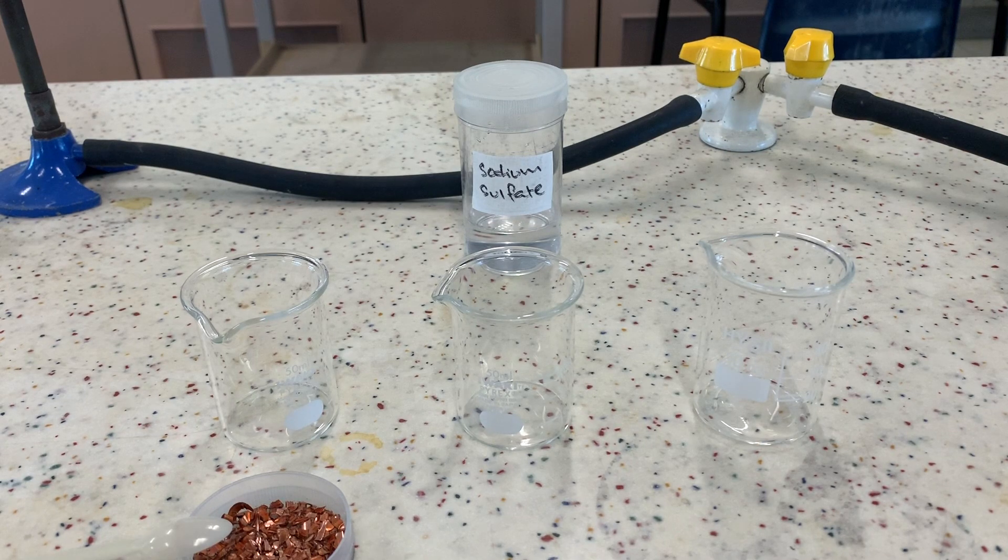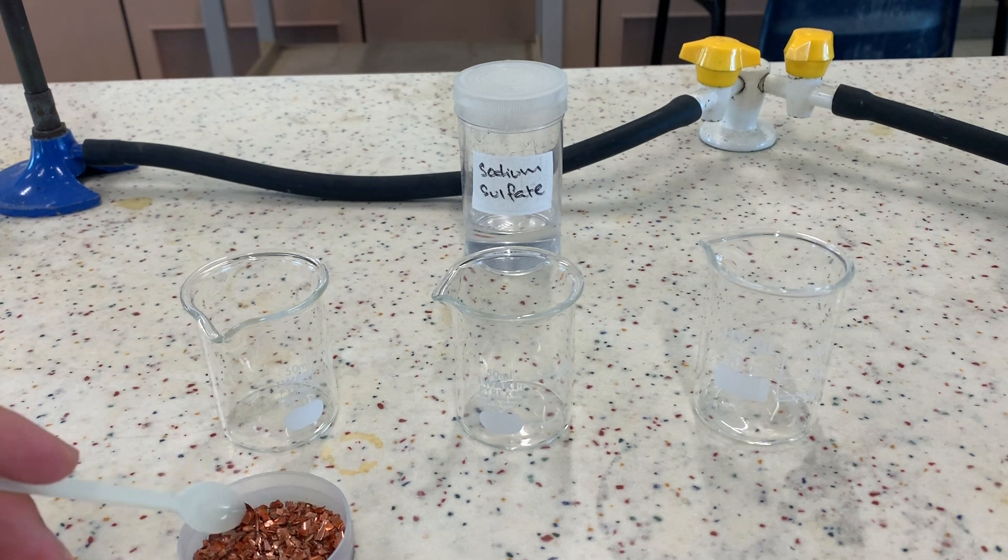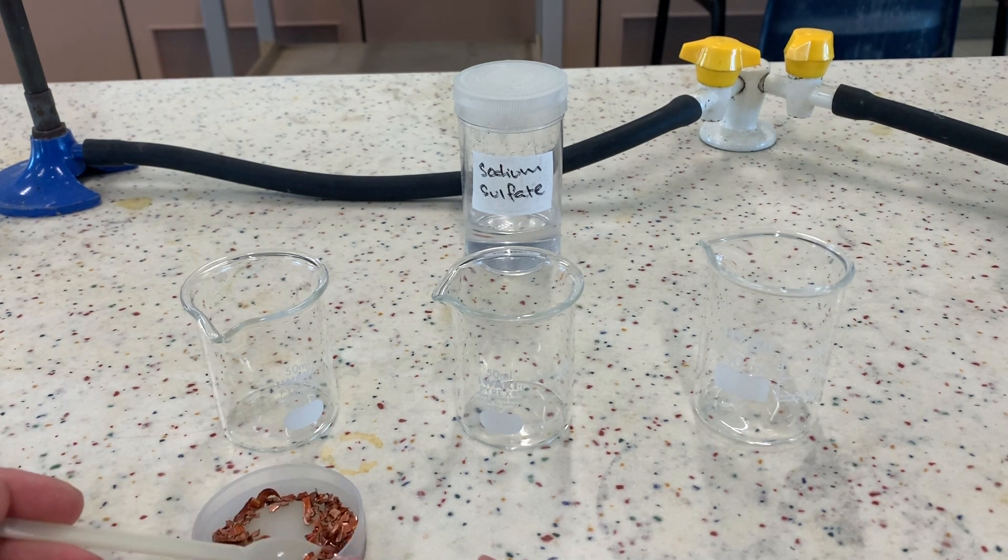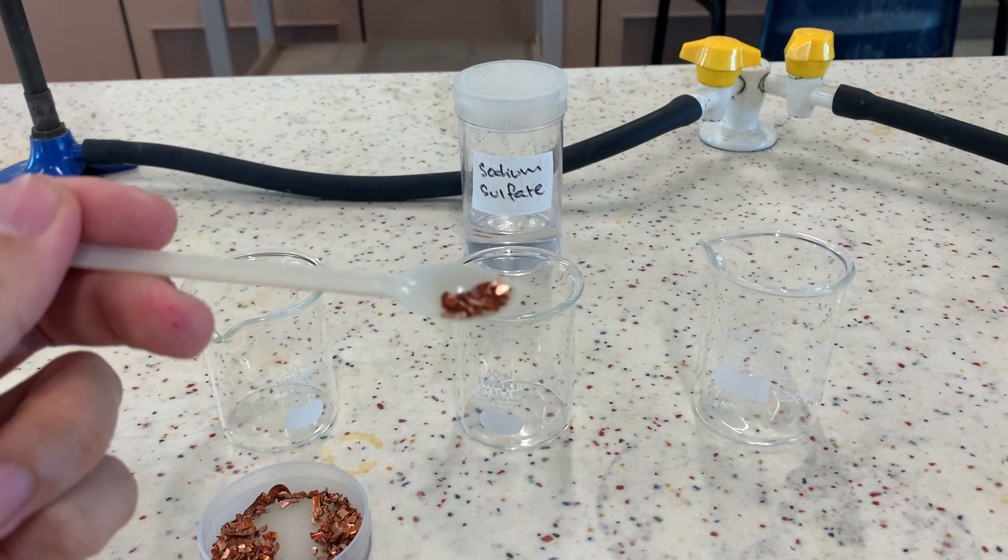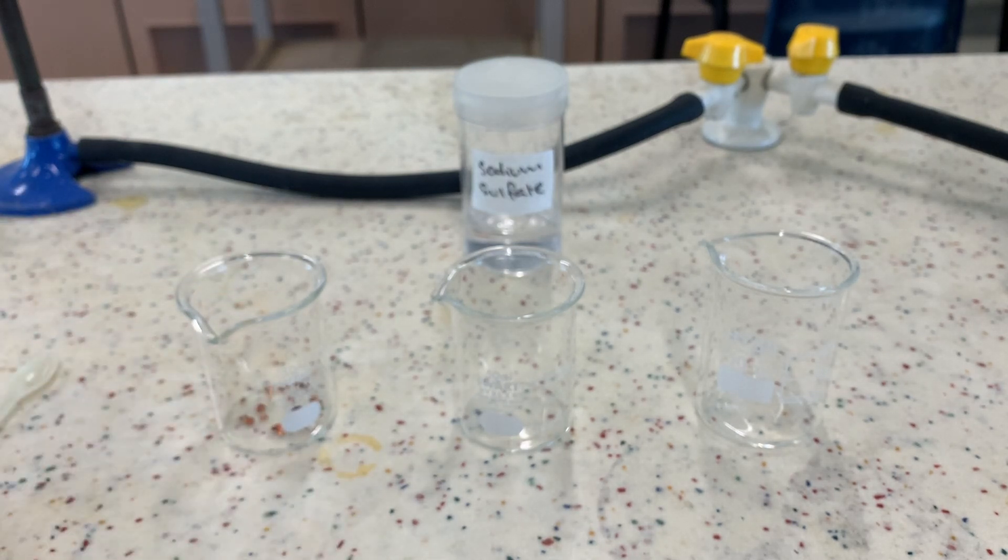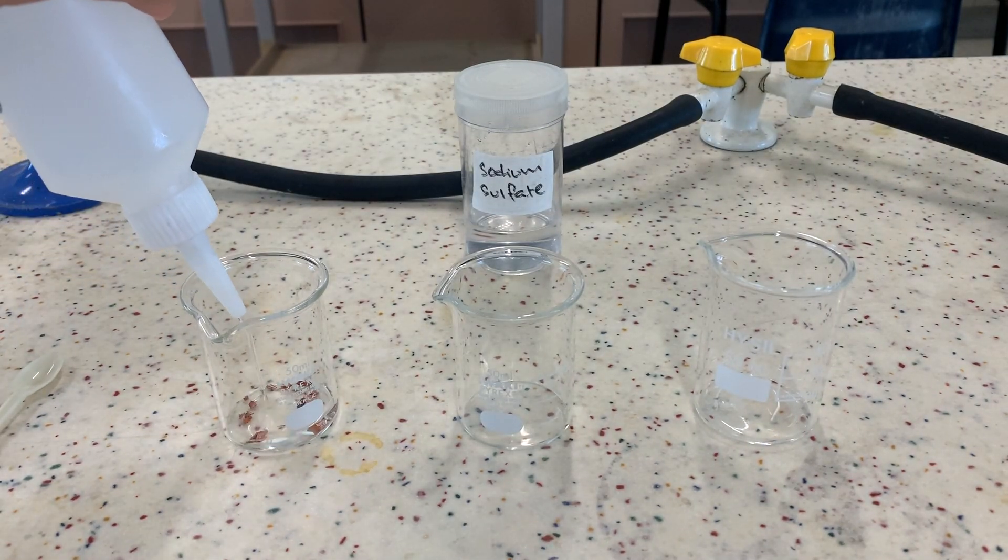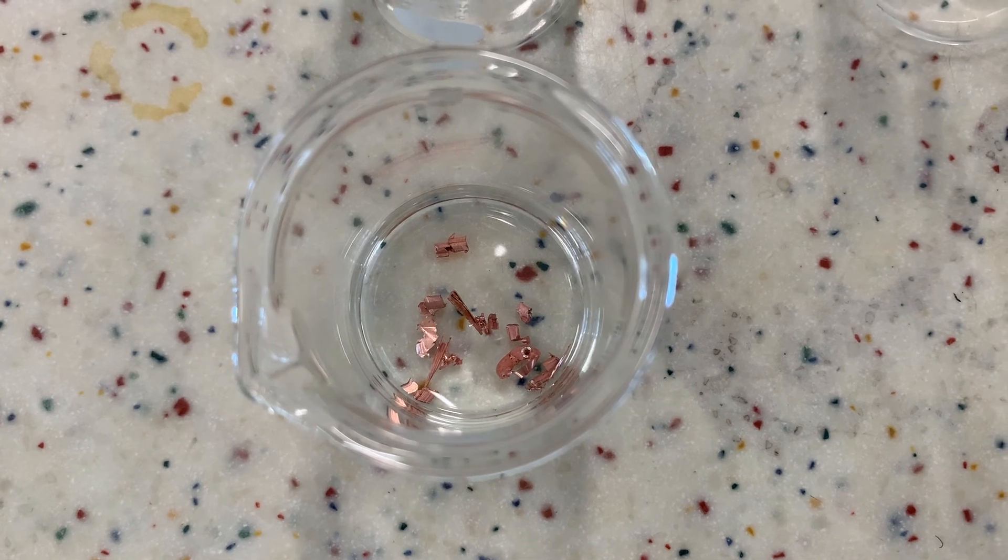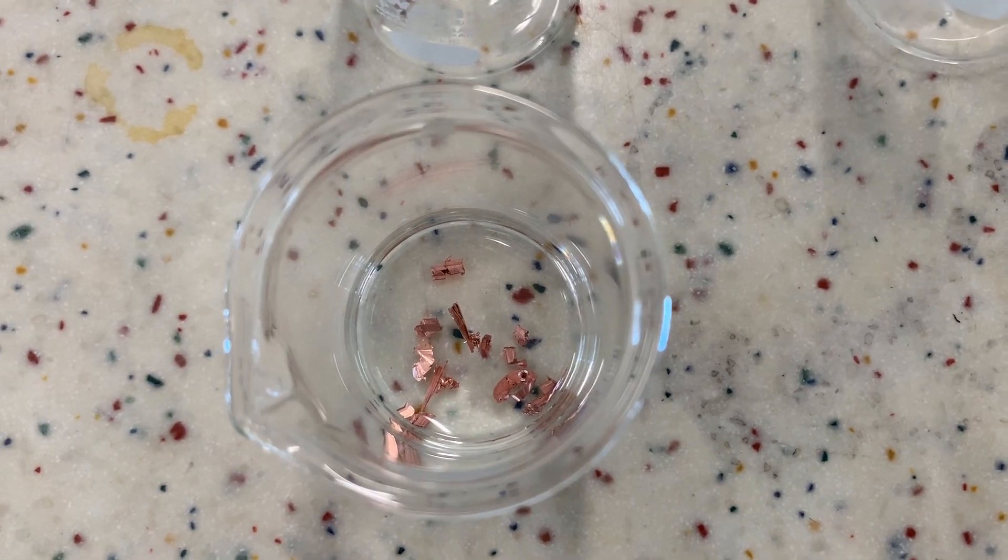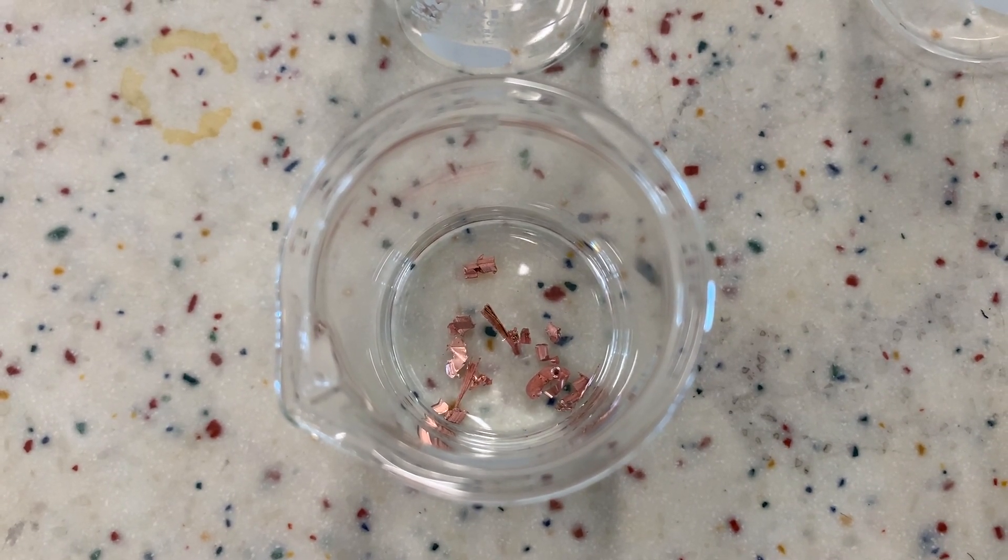Over here we're going to test out different combinations of reactants and see which one works the best. We are going to use the predict, observe, explain thinking routine again. Before I carry out the reaction, I would like you to think whether a reaction would take place and what you think you might see. The first combination that we are going to test out involves pieces of copper. I'm going to add that to a beaker, and to that, I'm going to add some sulfuric acid. Well, it seems like there is no visible reaction. There's no evidence of any bubbling at all. And that's because copper is an unreactive metal and it doesn't react with sulfuric acid.